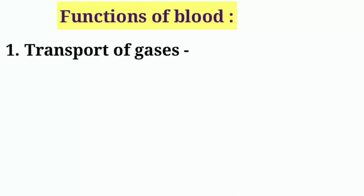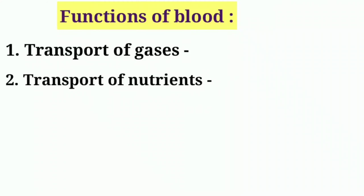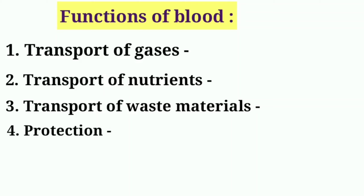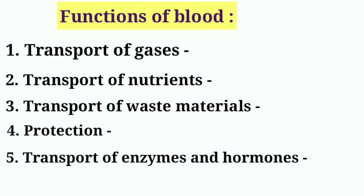Functions of blood: Transport of gases – oxygen is transported via blood from lungs to body tissues, and carbon dioxide from tissues to lungs. Transport of nutrients – blood transports nutrients like glucose and amino acids from the wall of the alimentary canal to each cell. Transport of waste material – blood carries waste material like urea to the kidneys for excretion. Protection – antibodies in the blood protect the body from microbes. Transport of enzymes and hormones – enzymes and hormones are transported by blood from their site of production to the target site.